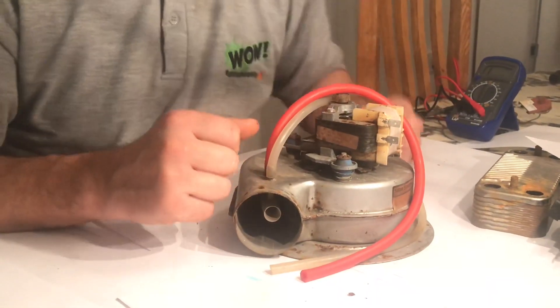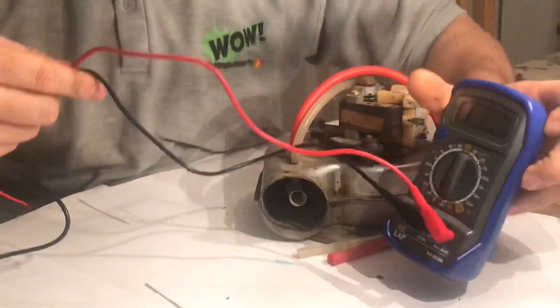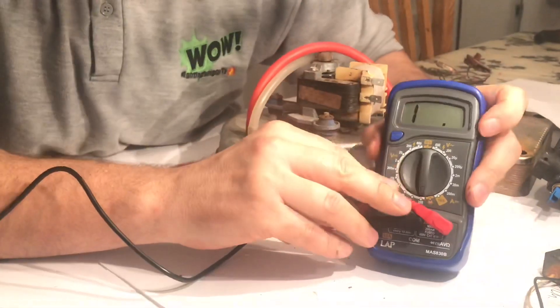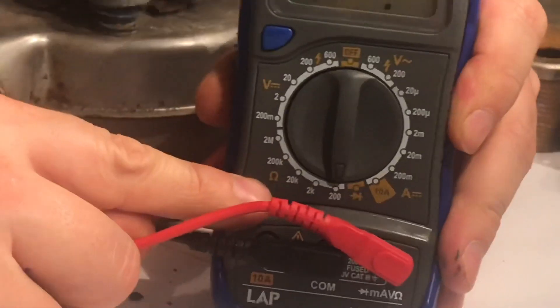A good thing you can do to check an older fan like this is check the resistance. To check the resistance, you get a multimeter and change it to the horseshoe. There's the horseshoe, look.